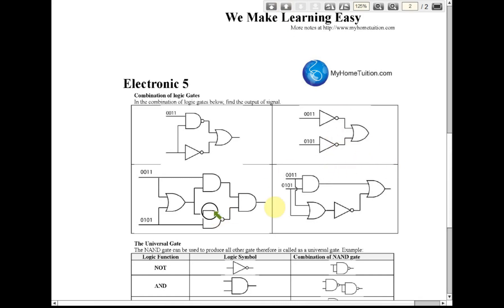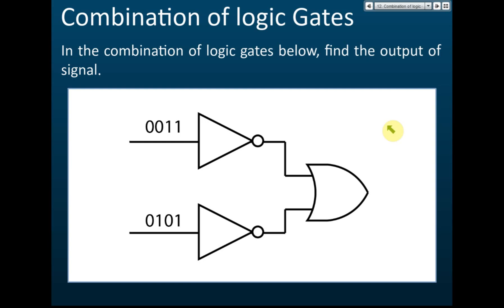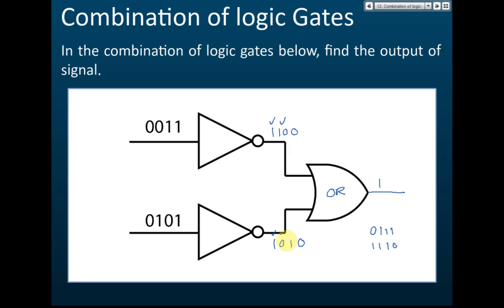Now try the next three practice sets yourself. For the first one: input A is zero, zero, one, one — after the NOT gate it becomes one, one, zero, zero. Input B is zero, one, zero, one — after the NOT gate it becomes one, zero, one, zero. The final gate is an OR gate: one OR one gives one, one OR zero gives one, zero OR one gives one, zero OR zero gives zero. Answer: one, one, one, zero.